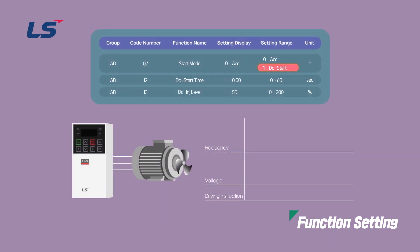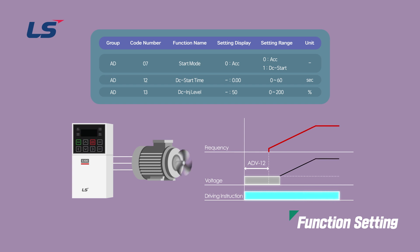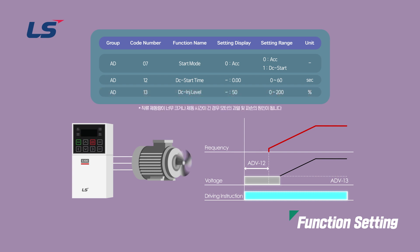The DC start method accelerates after applying direct current voltage to the motor for the set DC start time. If the motor is rotating before the voltage is output from the AC drive, DC braking will stop the motor rotation and then accelerate. It can also be used when a constant torque is required even after opening the machine brake under vertical loads using a machine brake on the motor shaft. The DC injection level can be set based on the motor rated current and should be set to a value within the AC drive rated current.